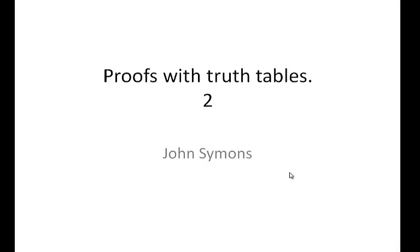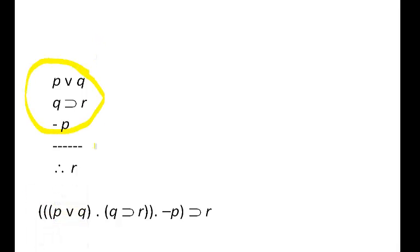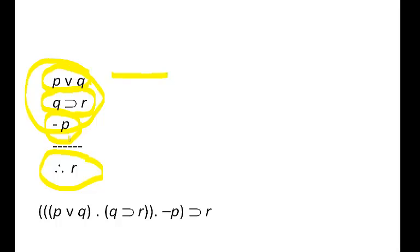Let's look at another example. Here we have three premises, and we're being asked to prove that R follows from these three premises. We've got P or Q, and we've got not P, and we've got if Q then R. Notice that the first premise says P or Q, and the third premise says not P. So what can we automatically conclude by the rule of disjunctive syllogism? We'll cover that rule of inference later on.